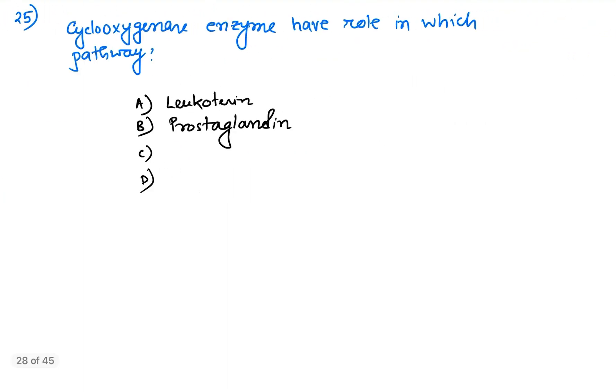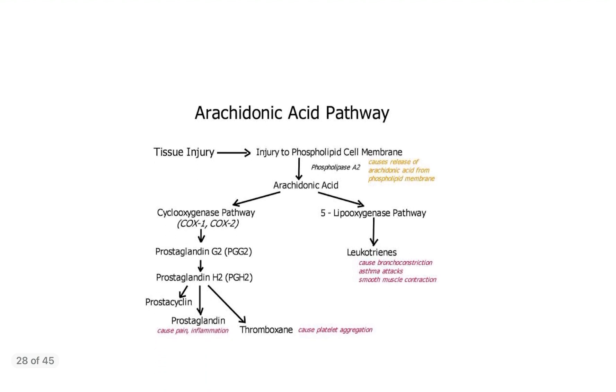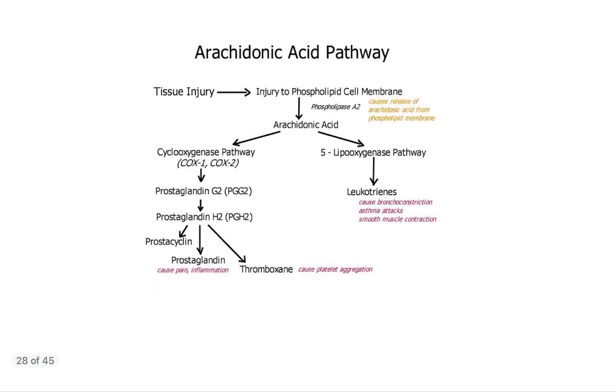Coming to question number 25. Cyclooxygenase enzyme have role in which pathway? It is definitely a straightforward question, prostaglandin pathway. As you can see, the arachidonic acid pathway from phospholipid by the action of phospholipase A2, the arachidonic acid is produced.